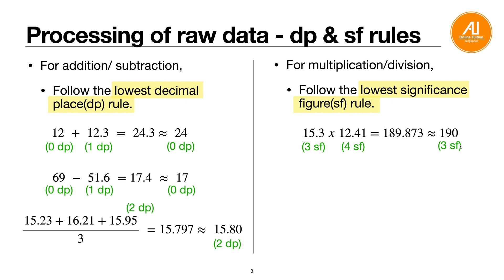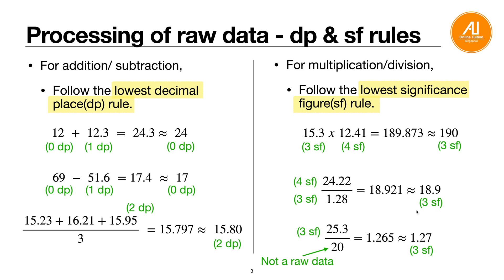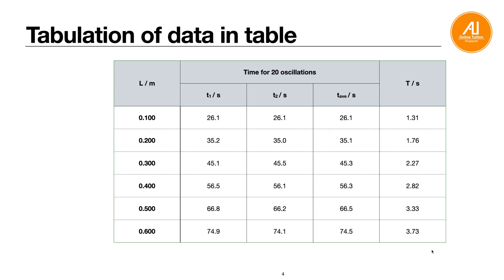For division: 24.22 ÷ 1.28 — 4 SF divided by 3 SF gives 18.921, but you follow 3 SF so the answer is 18.9. Another example: 25.3 (3 SF) divided by 20 — note that 20 is not raw data, so you get 1.265 and round to 3 SF giving 1.27.